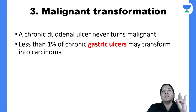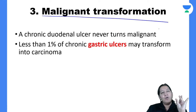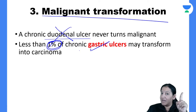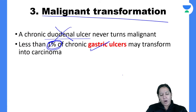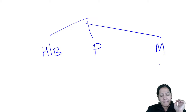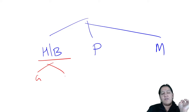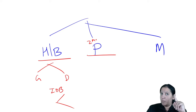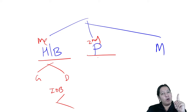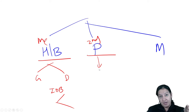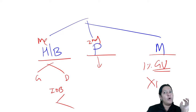The third and rare complication is malignant transformation. The ulcer, which is benign, can convert into malignant. This occurs only in gastric ulcer — only 1% of gastric ulcers. It does not occur in duodenal ulcer; duodenal ulcer is always benign. So the three complications: most common is hemorrhage or bleeding, second is perforation, and third is malignant transformation. Perforation is the most common cause of death.